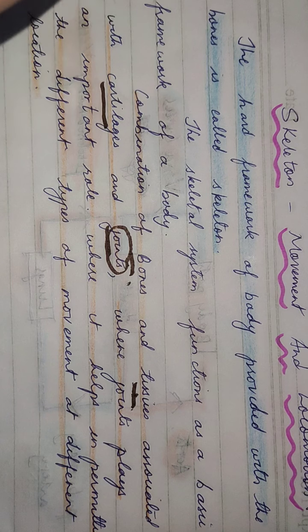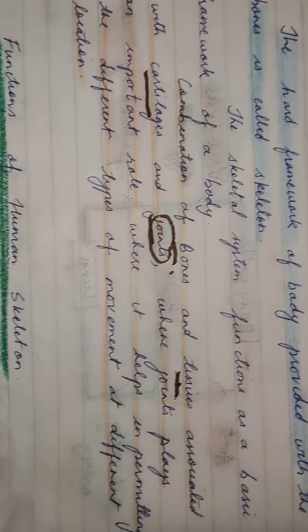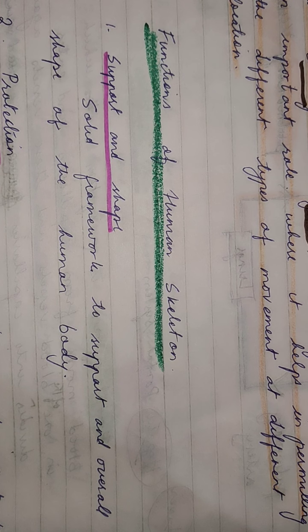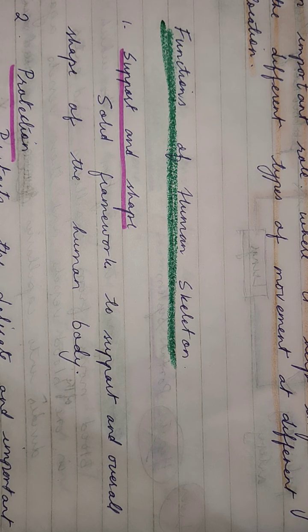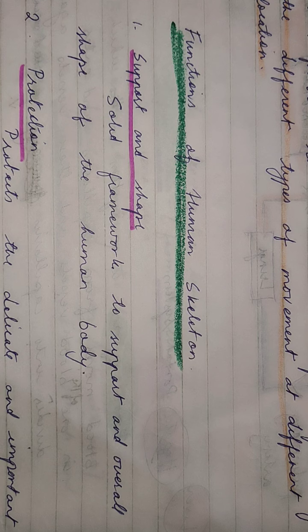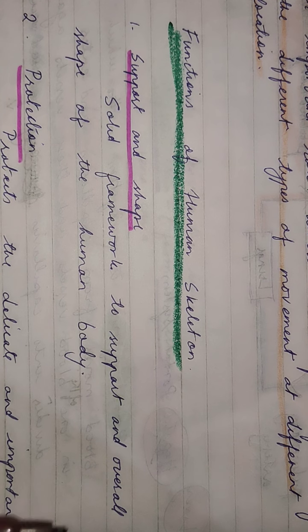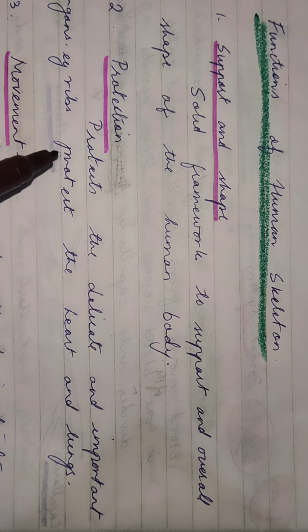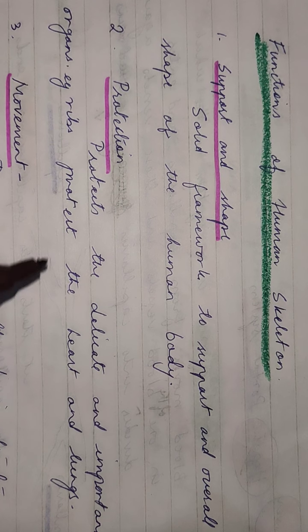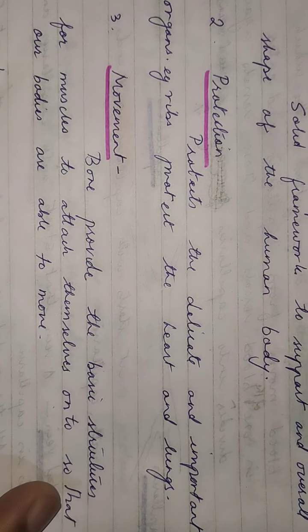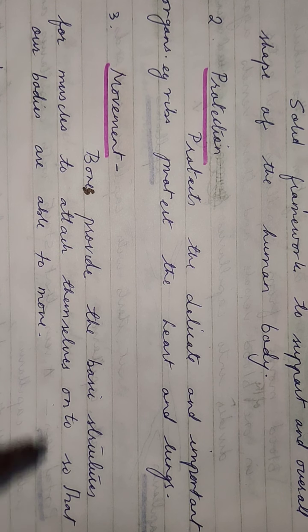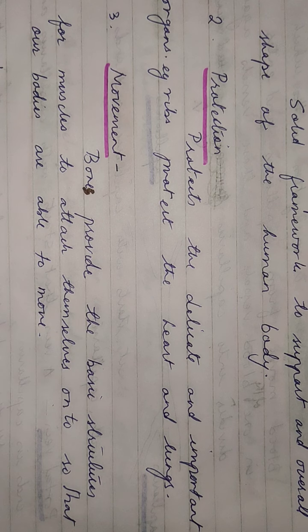Now, the functions of the skeletal system. First is support and shape — it provides a solid framework to support the overall shape of the human body. Second is protection — it protects delicate and important organs; for example, ribs protect the heart and lungs. Third is movement — bones provide the basic structures for muscles to attach themselves onto, so that our bodies are able to move.